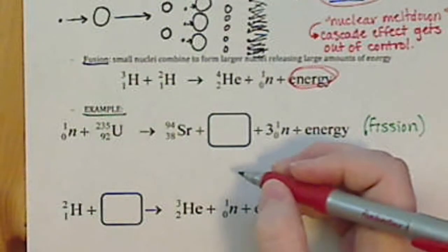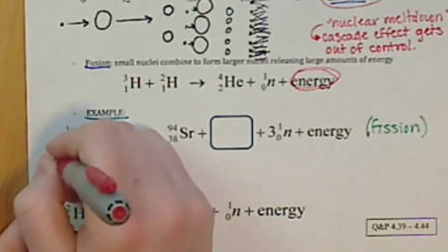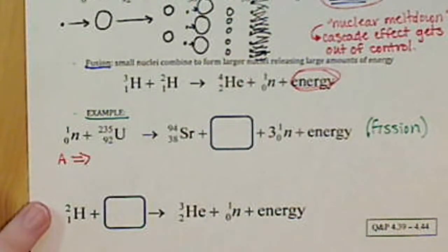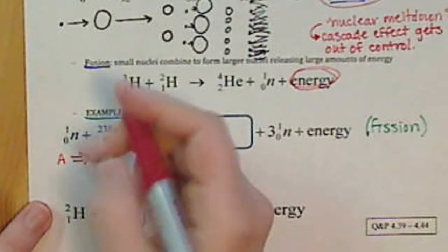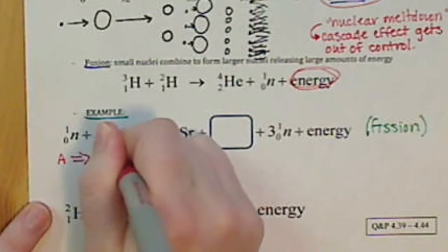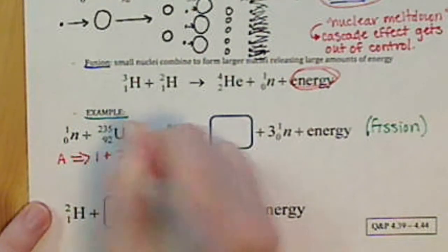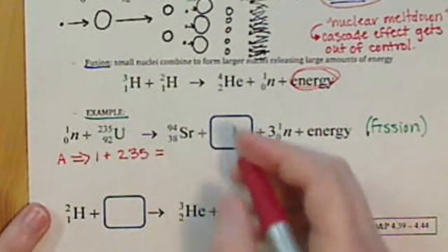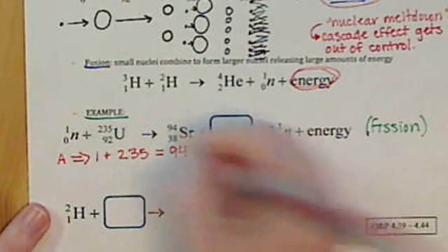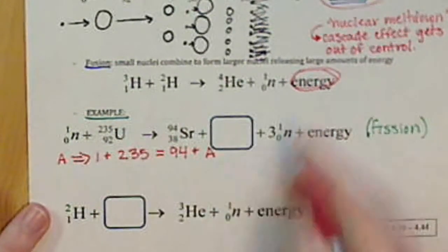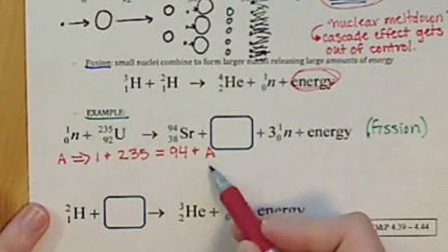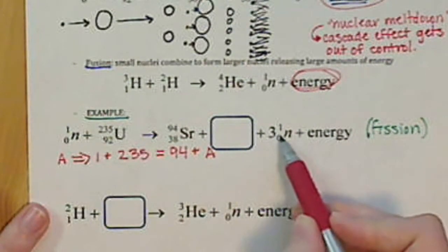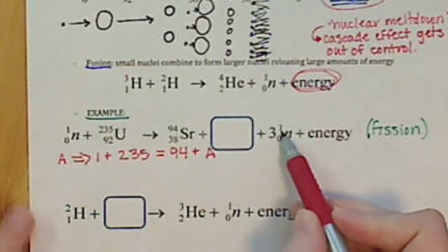So we have our mass number. So our A, to determine that basically we want to conserve them. So we have 1 + 235 and that's going to equal, we have 94 from our strontium. Then we have our missing symbol here. So I'm just going to label that A, our mass number.